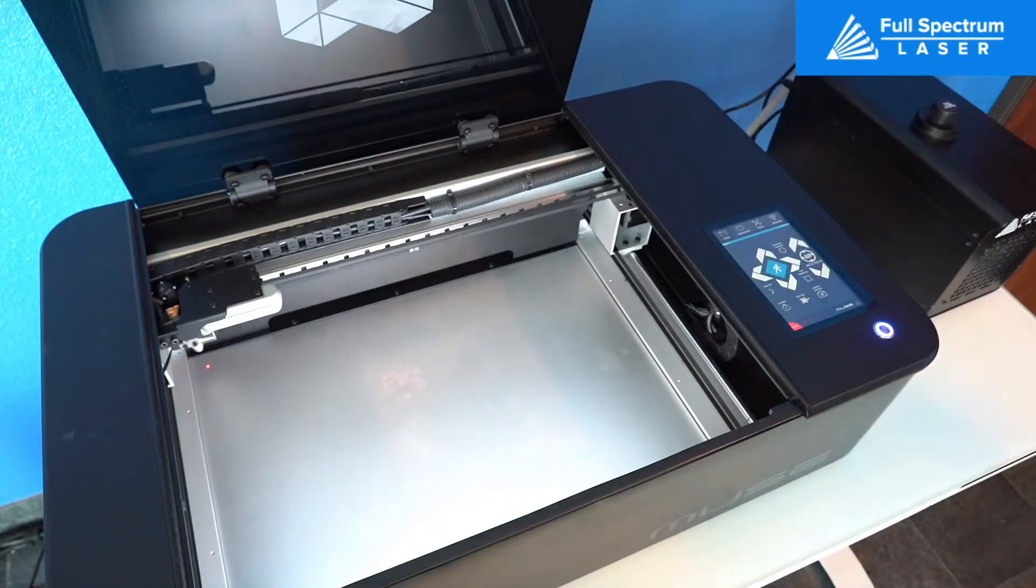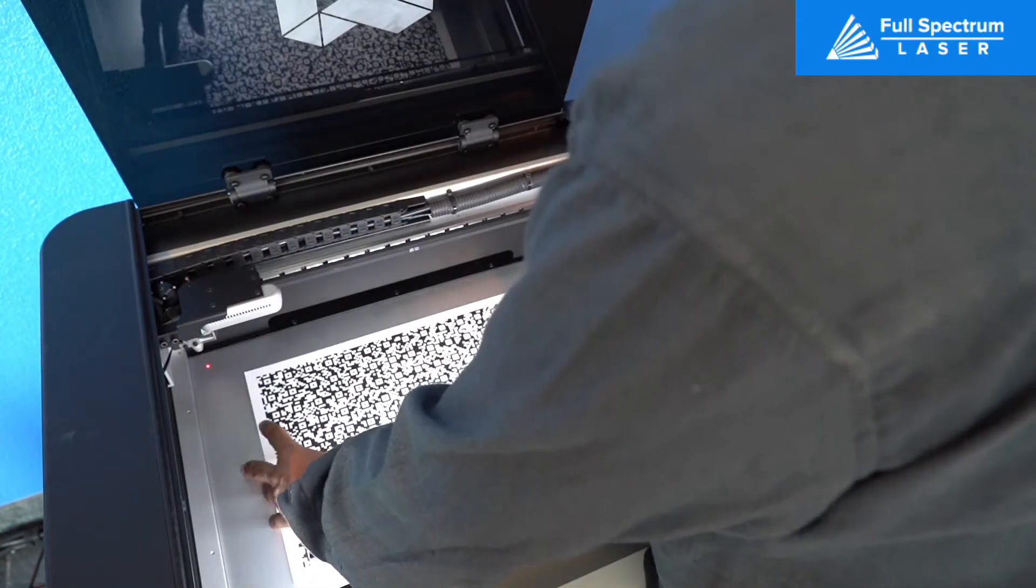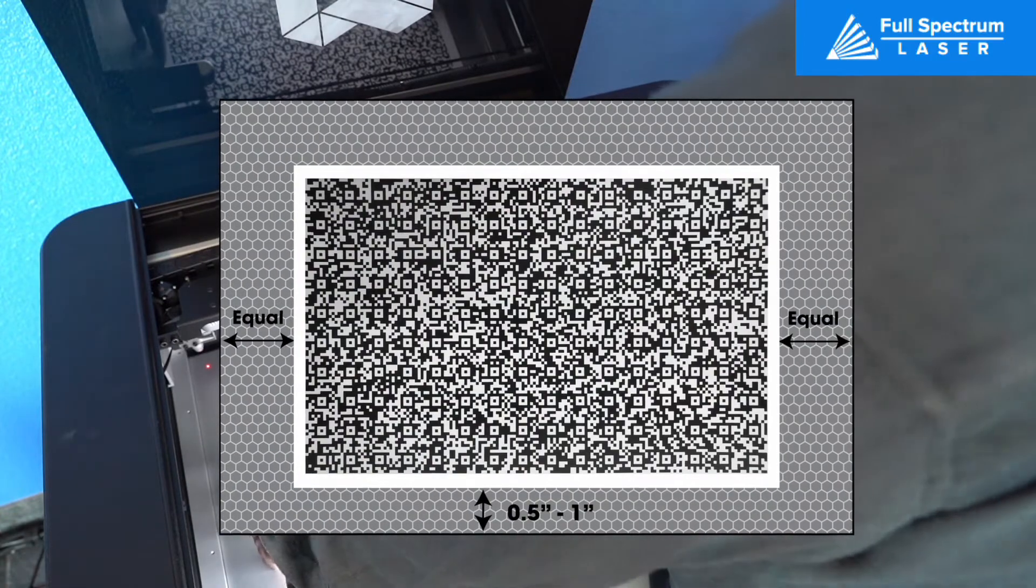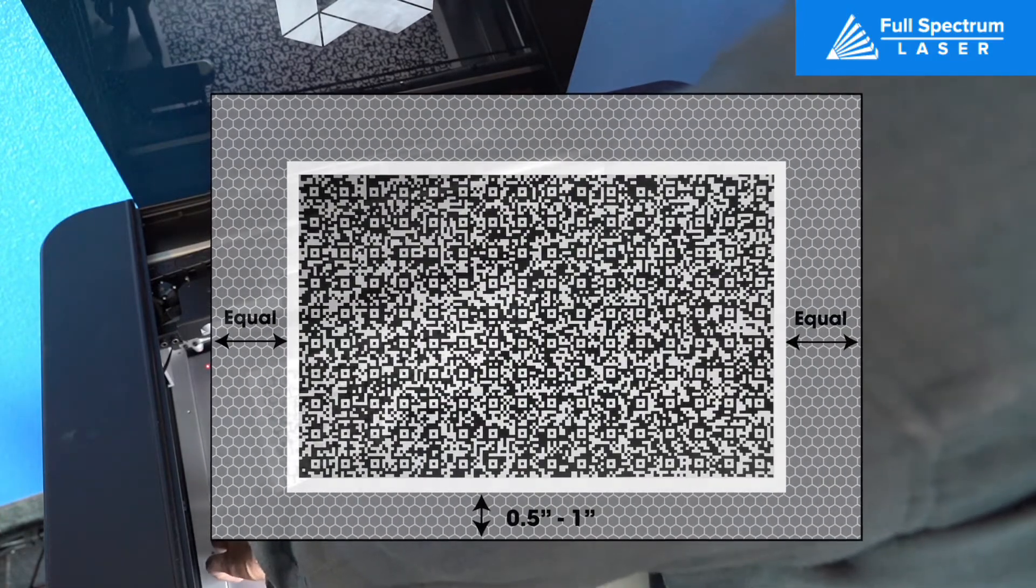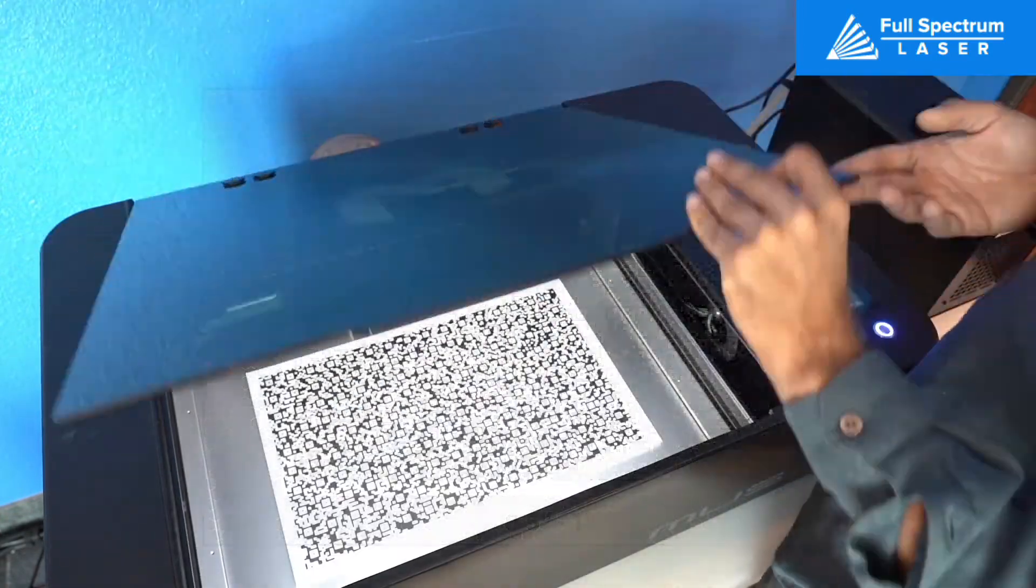Place calibration sheets centered on the bottom plate. The bottom edge of the calibration sheet should sit approximately one half inch to one inch away from the back edge of the bottom plate.